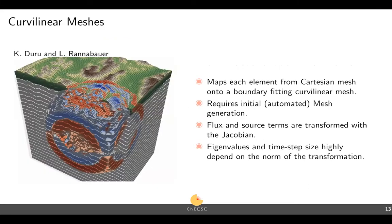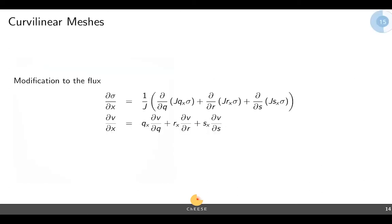With curvilinear meshes — a fairly well-known method — you simply map each element from a Cartesian mesh onto a boundary-fitting curvilinear mesh. All this is, is taking the cube from the previous picture and slightly deforming each of the elements, as you can see on the left. This requires an initial automated mesh generation. Here the flux and source terms are transformed by the Jacobian, which I'll show on the next slide. What this means in practice is that eigenvalues and therefore the time step size depend on the norm of the transformation. If you have some very steep elements in your discretization, your time step size will become very small. This method works best if your topography is relatively flat.